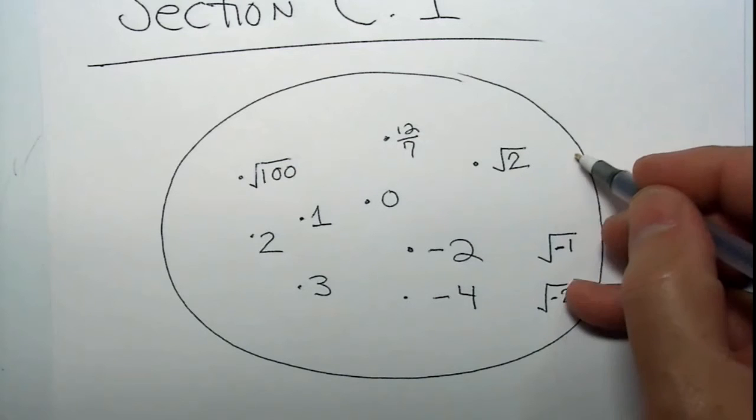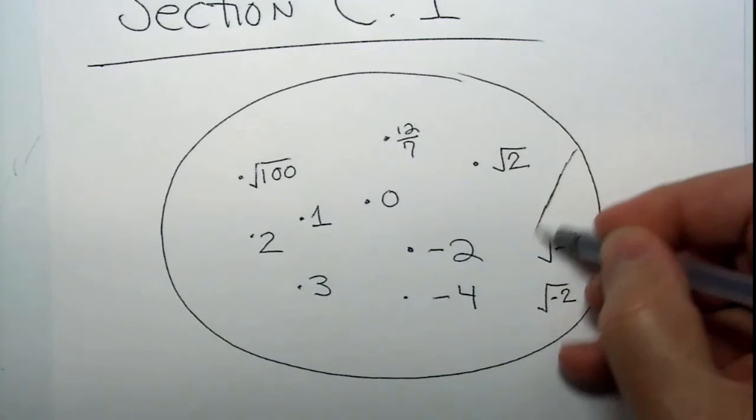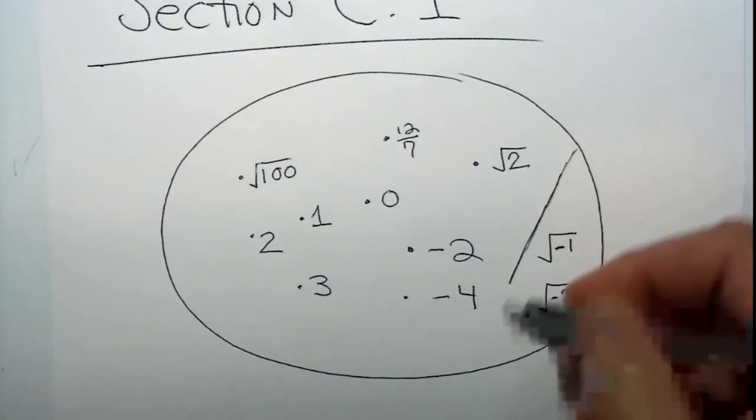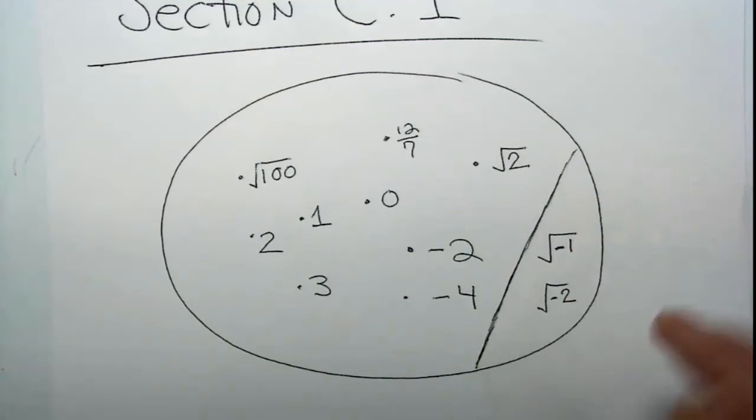Right away, there is a separation. These numbers over here just simply don't exist in the real world. You're not going to find them on a ruler. You're not going to find them on a number line. A computer is not going to be very happy about those numbers, and neither is your calculator generally — although some of these more advanced calculators know what to do with those numbers. So those are called imaginary numbers.